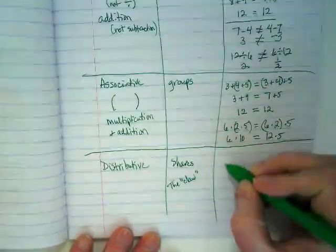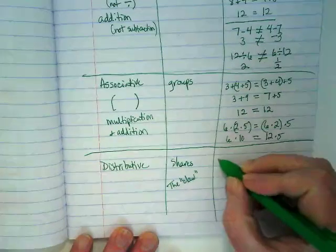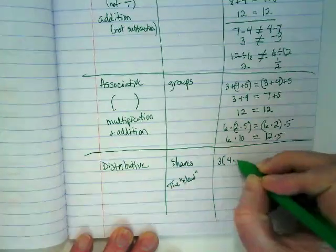So you're going to see in a minute what I mean by the claw. If I have 3×(4+5)...